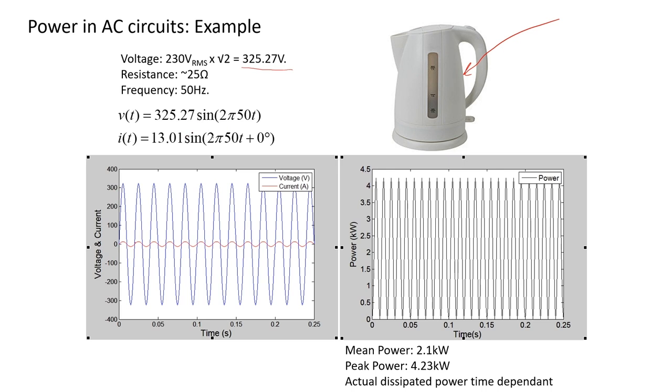So from that we can calculate what the current waveform would look like. Because it's a resistor there's no phase shift, so the frequency stays the same. There's no phase shift. These are both sines - it doesn't matter whether they're sines or cosines. And the amplitude of that current is around 13 amps.